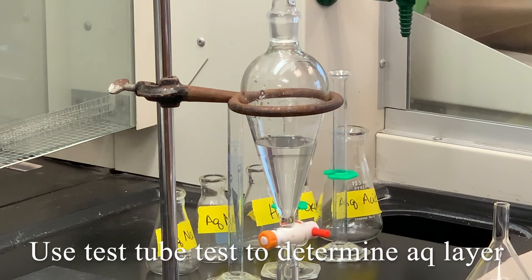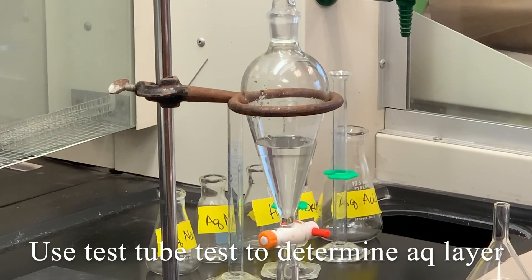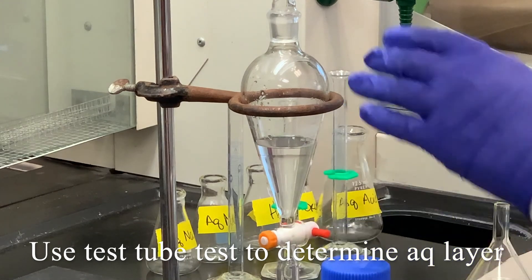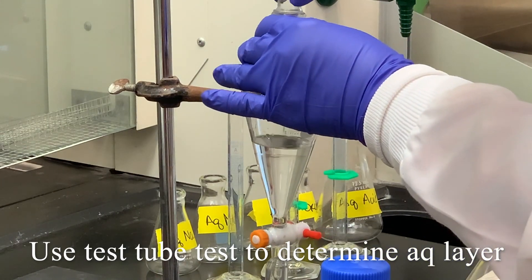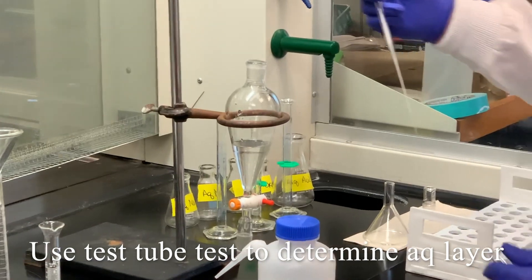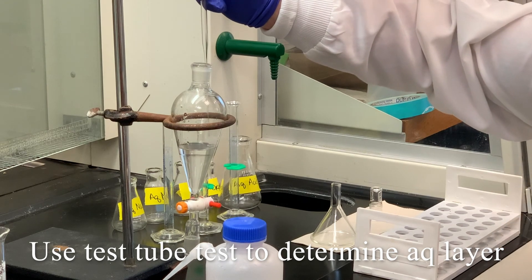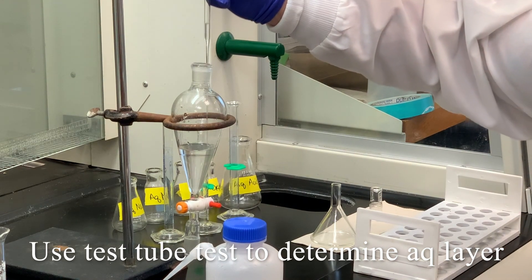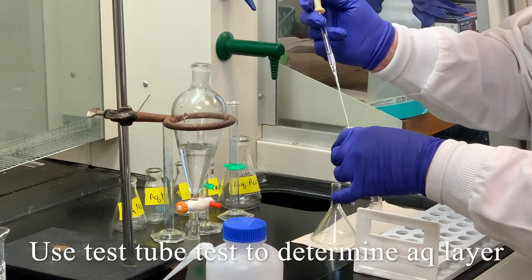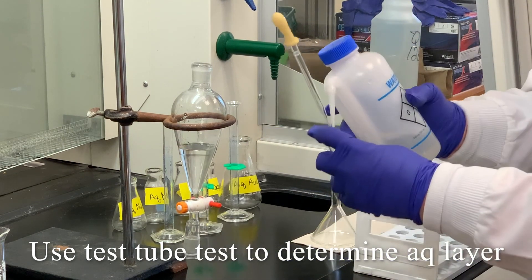But just to kind of go through that test tube test again, I think that is very useful. So what I'm going to do is I'm going to remove the stopper, and I'm going to take some of the top layer, add it to the test tube, and then I'm going to add water to that.